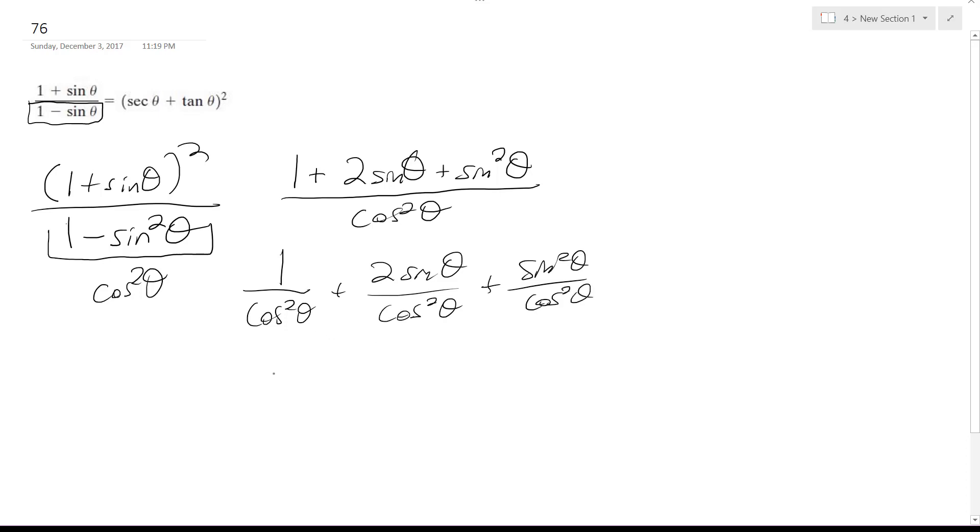Plus sine squared theta over cosine squared theta. Same thing as secant squared theta plus 2 secant theta tangent theta plus tangent squared theta, which is the same